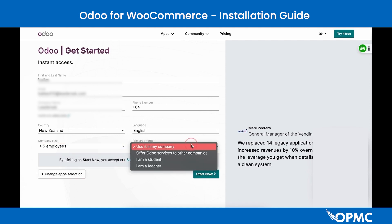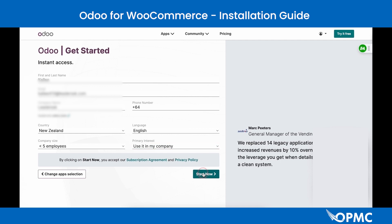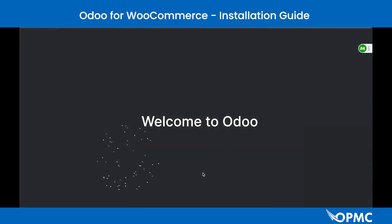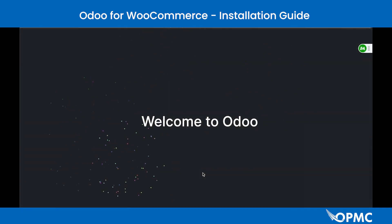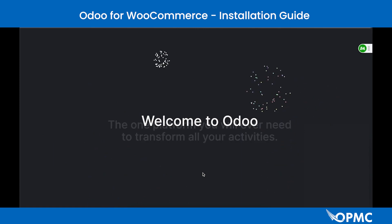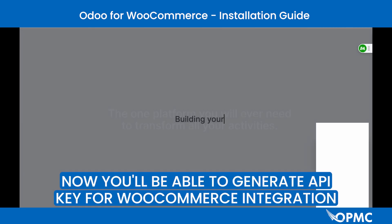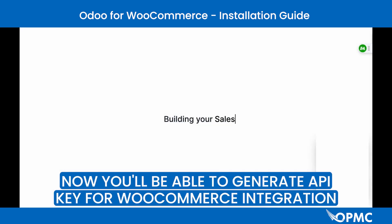Enter further information that is required and move on to the next step. Once your database is set up, you'll be able to generate an API key for your WooCommerce integration.